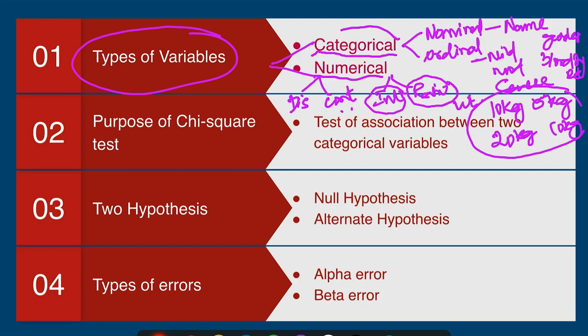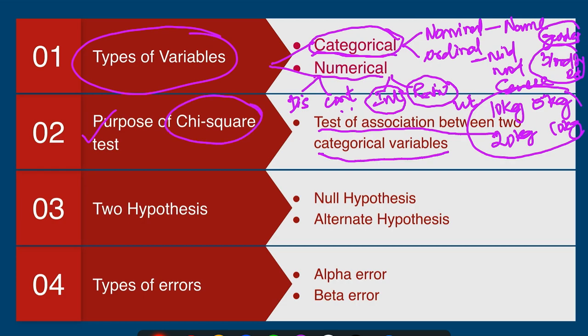We are going to use chi-square test for two categorical variables. The purpose of chi-square test is to compare or study the association between two categorical variables. For example, gender and blood group are categorical variables, so when studying the association between gender and blood grouping, you can use chi-square test as a test of association.